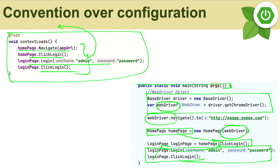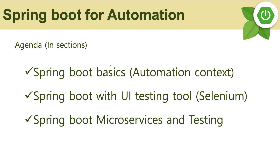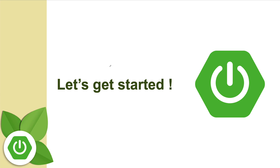That is the pain of classical Java code versus Spring Boot code. We'll cover the difference in depth in our next lecture. As for the series agenda: it will have a Spring Boot basics section, followed by a Spring Boot with UI testing section using Selenium (or Playwright if you prefer), and then a section dedicated to Spring Boot with microservices and API testing. Those are the three sections we'll be covering. I'm excited to get started — let's learn Spring Boot together!